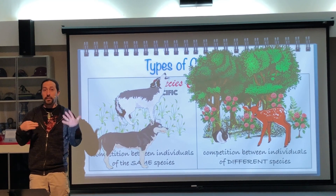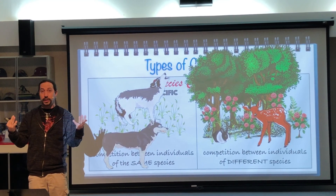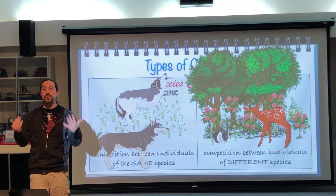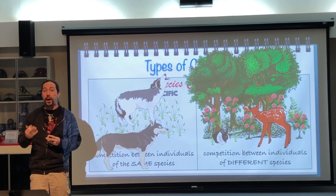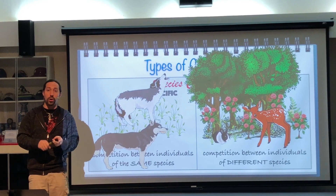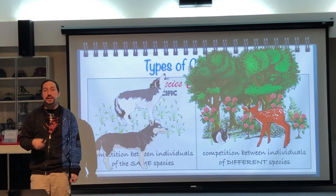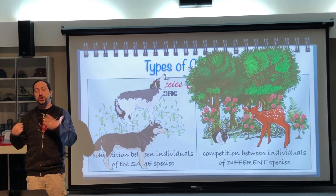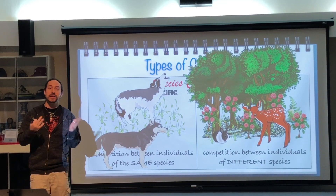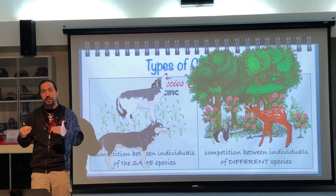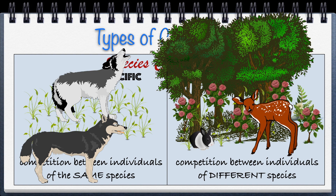Interspecific competition includes predator-prey relationships and organisms competing for the same food — like a rabbit and a deer both eating the same plants. A tree can out-compete grass or a bush because it's taller and gets more sunlight, but it also requires more water and nutrients, so there's a check and balance. This competition causes some traits to be favored and others to be disfavored — some traits increase in the population while others decrease.